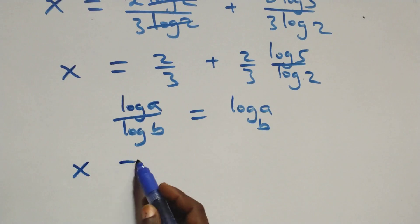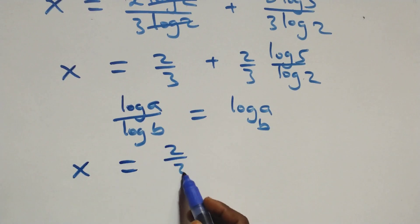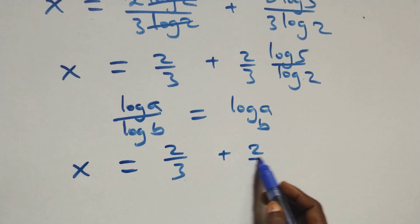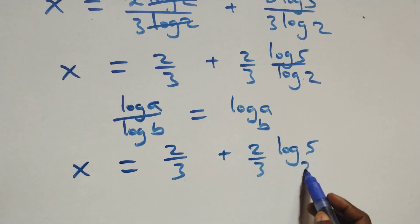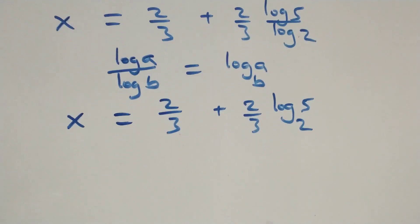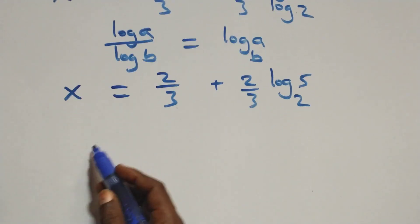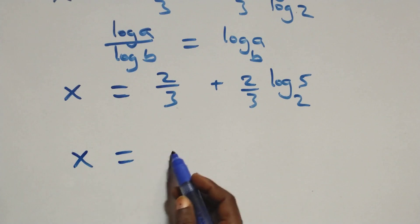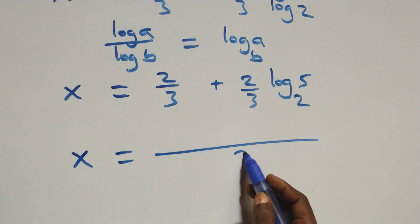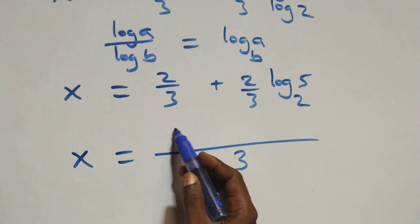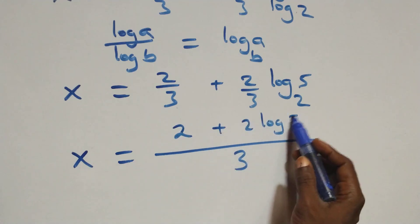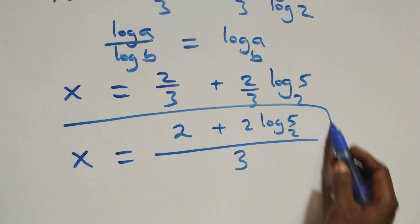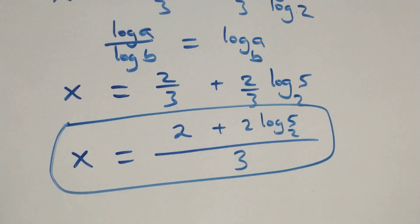So we have x equals to 2 over 3 plus (2 over 3)·log 5 base 2. Bringing this together as one fraction, we have x equals to 2 plus 2·log₂5, all over 3.